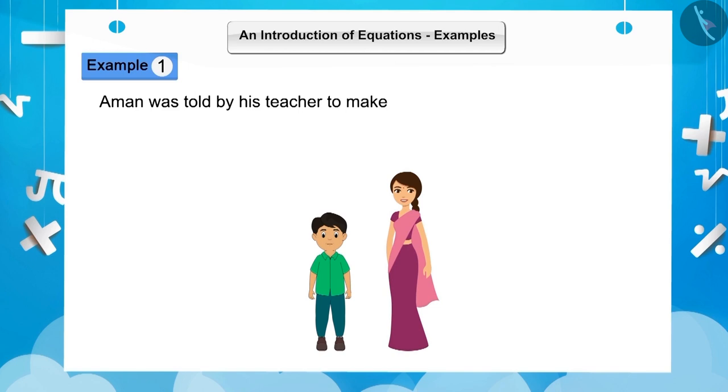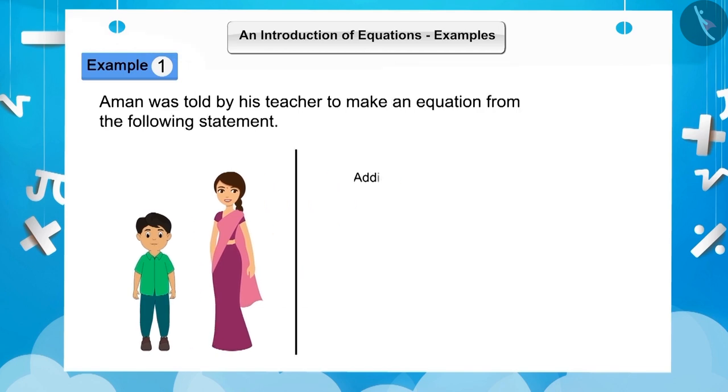Aman was told by his teacher to make an equation from the following statement: adding 7 to the double of y gives 15. Y is a variable. Let's make an equation together. The double of y is 2 multiplied by y, that is 2y. As we know that adding 7 to the double of y gives us 15, the equation...